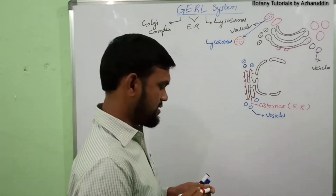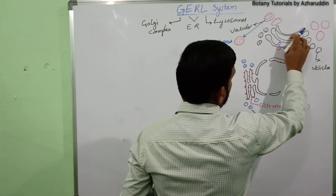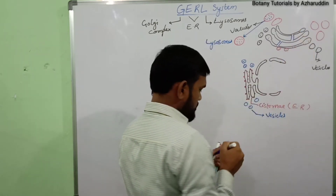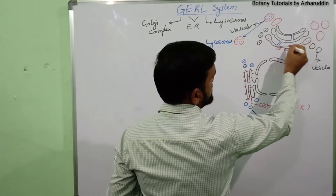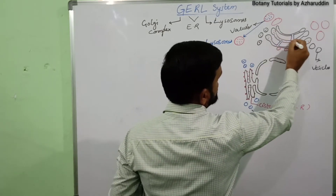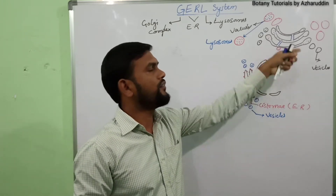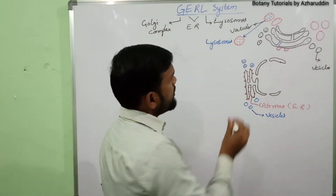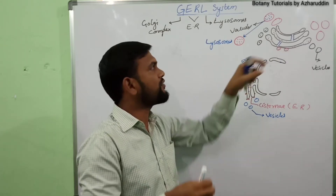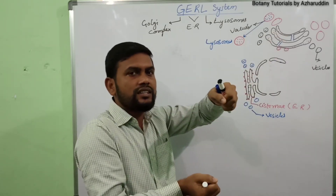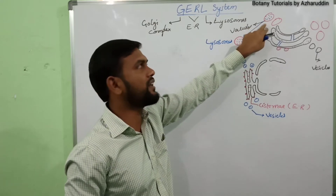The material present in the vesicles enters into the cisternae of the Golgi bodies. These cisternae are connected with one another, so the substance is transported from one cisternae to another within the Golgi body. Later, the ends of the cisternae are swollen and bud off to form vesicles, or enlarge to form vacuoles containing inactive hydrolytic enzymes.